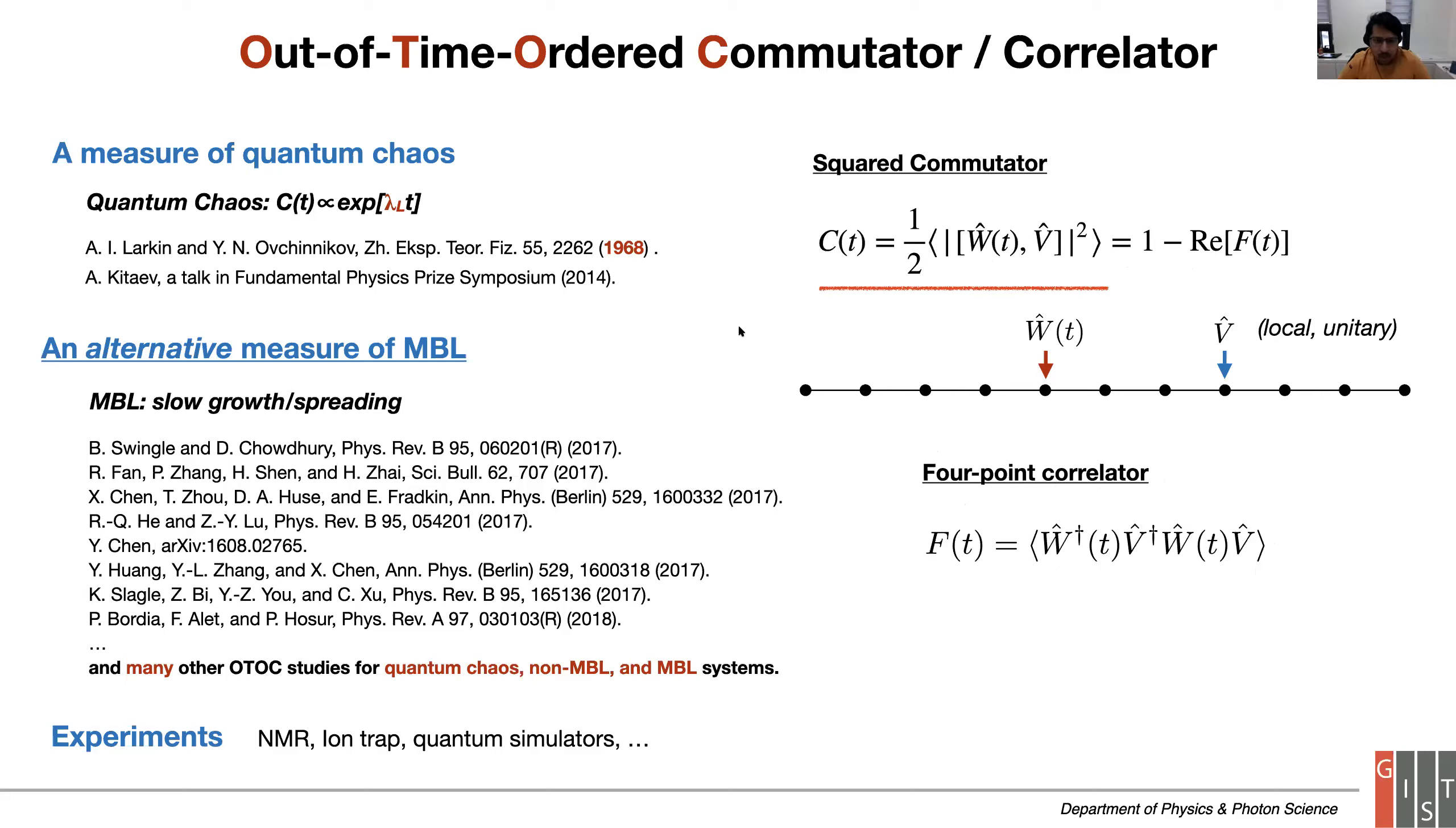What's OTOC? It's actually a very old quantity introduced by Larkin and Ovchinnikov, probably in their disorder superconductor paper. It resurrected 10 years ago and became really popular, getting into MBL studies around 2017. Can I quickly ask - how sensitive are these OTOCs to the state with which you average? That's one part of my talk, actually.